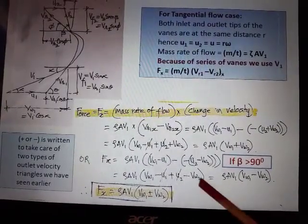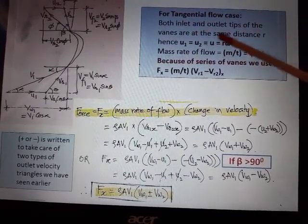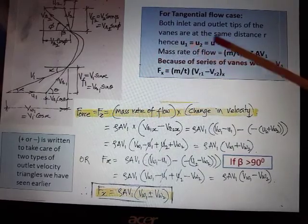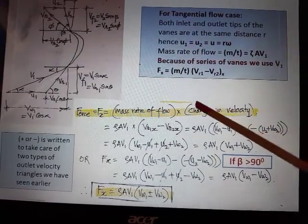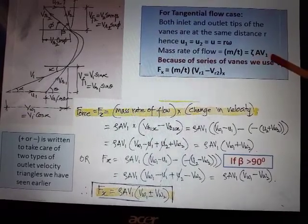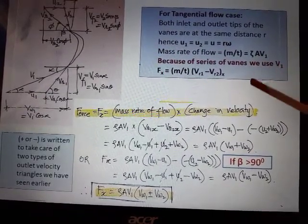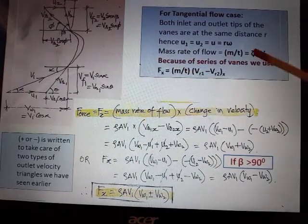So here for tangential flow case, both inlet and outlet are at the same distance, u1 equal to u2 equal to r*omega. Mass rate of flow becomes ρ*A*V1 because of series of vanes we use V1, so mass rate of flow is known.